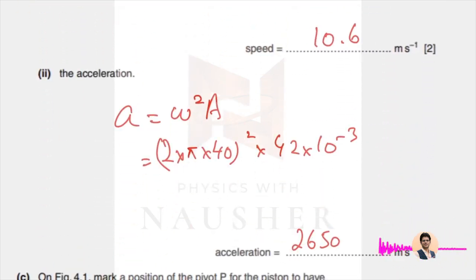Then the acceleration, which is omega squared A. Omega is 2 pi f whole square into the amplitude, and your answer should be 2650 after rounding it off.